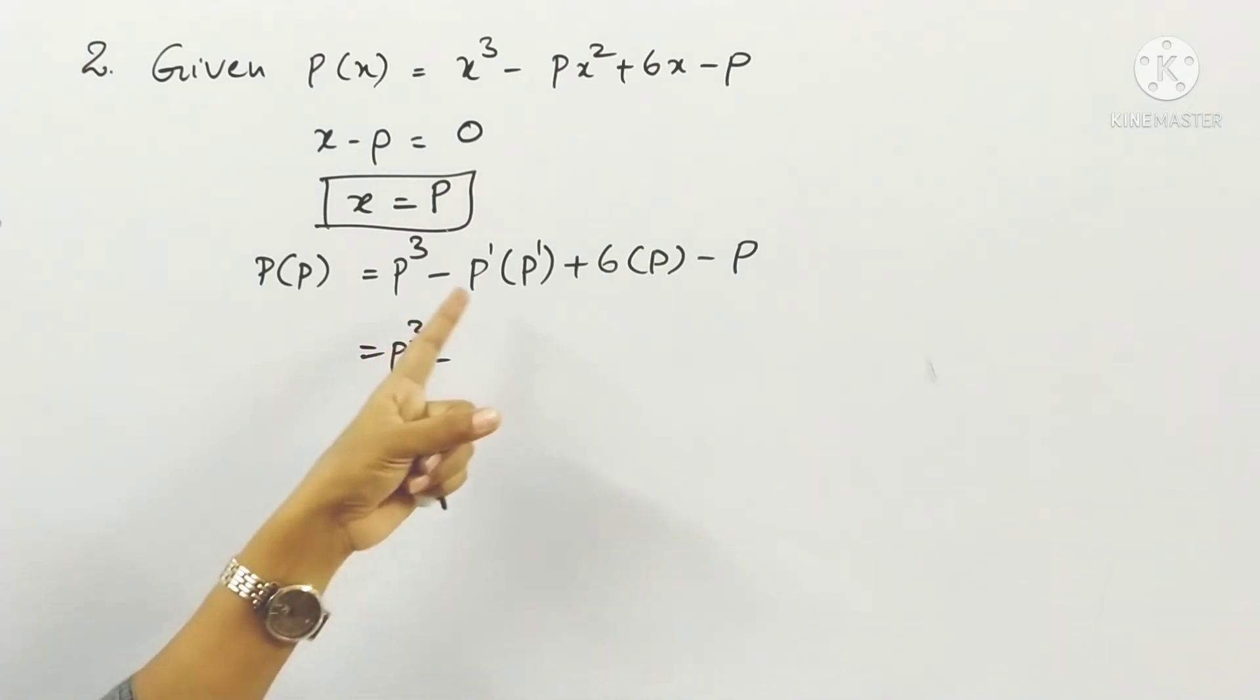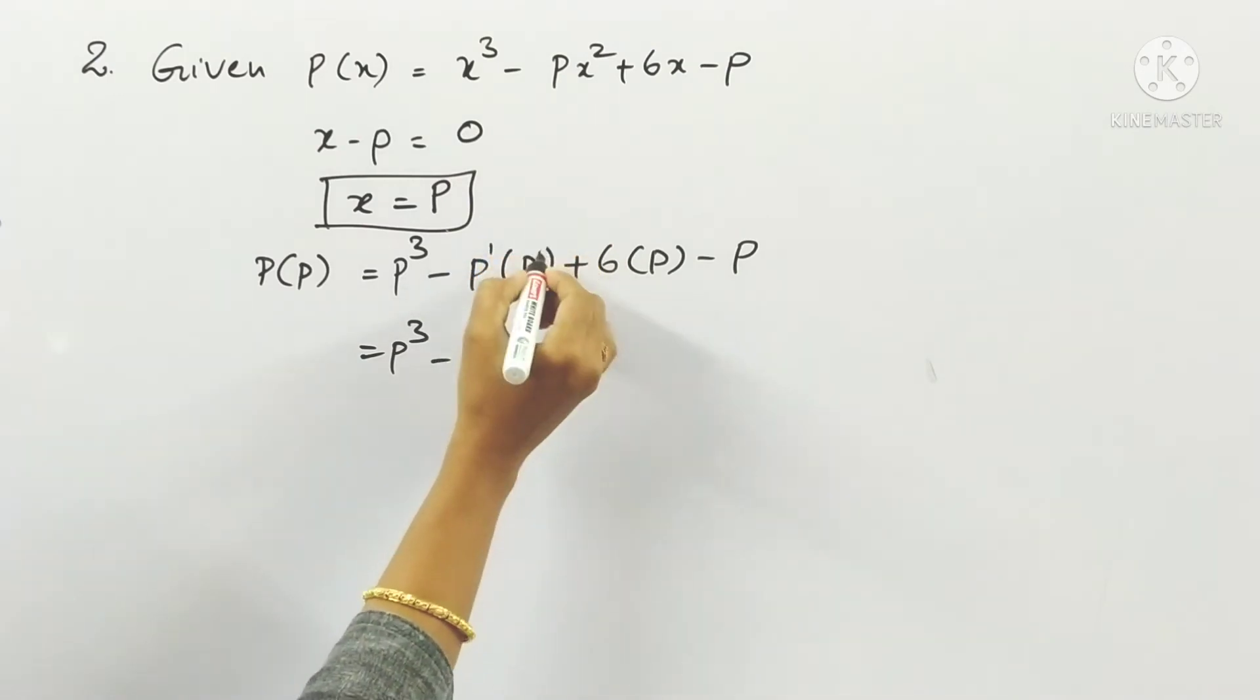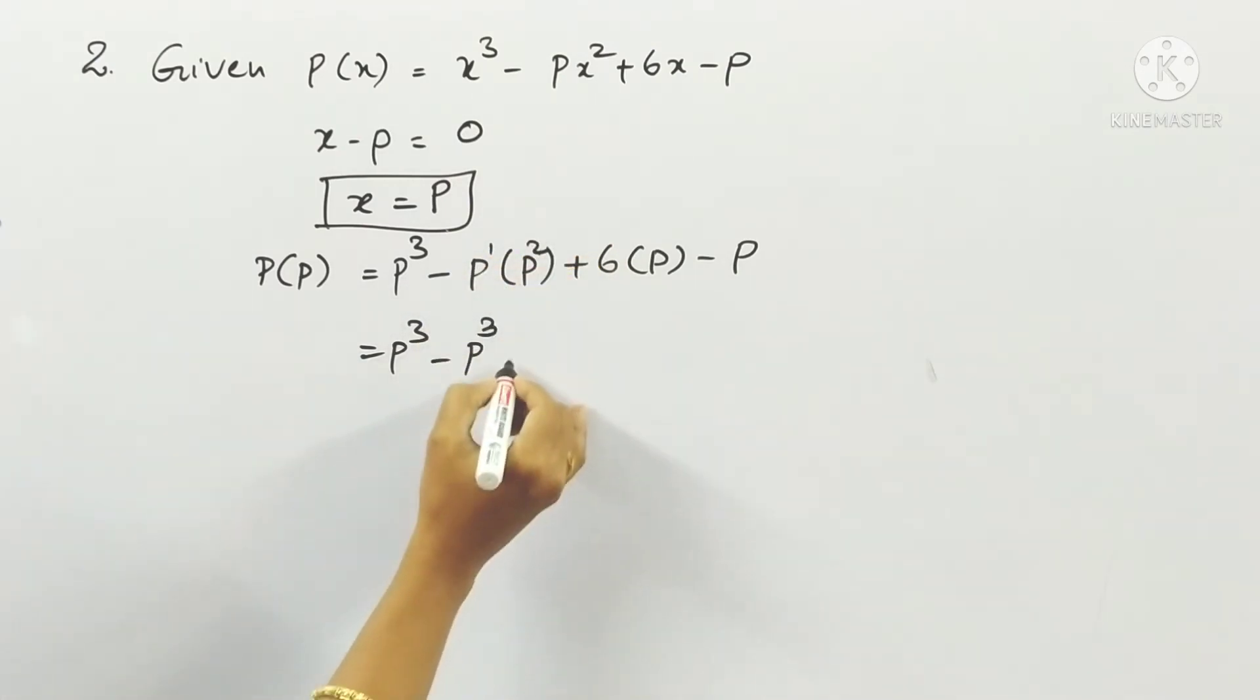If we cannot see any number in the power there is 1, so 1 + 1 = 2. Here x is squared, right? So this is p², 1 + 2 = 3, plus 6 into p, which is 6p.